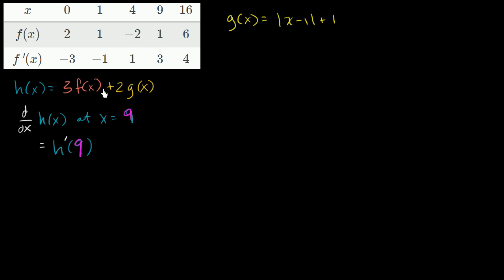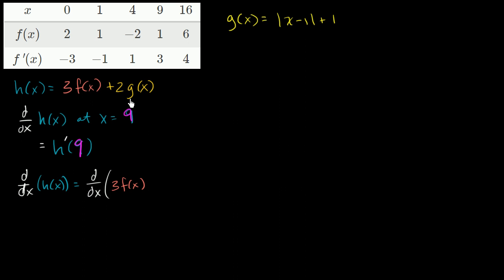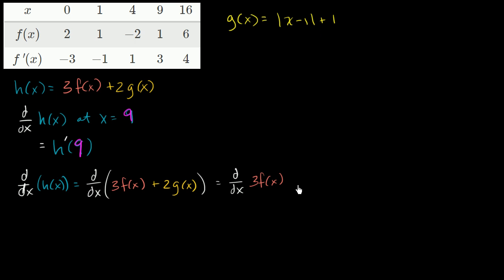Let's take the derivative of both sides of this expression to figure out what the derivative with respect to x of h is. The derivative with respect to x of h of x is going to be equal to the derivative with respect to x of 3 times f of x plus 2 times g of x. The derivative of the sum of two terms is the same as the sum of the derivatives of each term. So this is the derivative with respect to x of 3 times f of x, plus the derivative with respect to x of 2 times g of x.